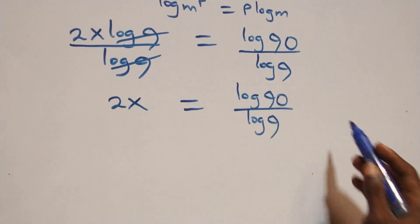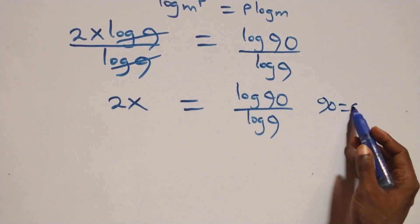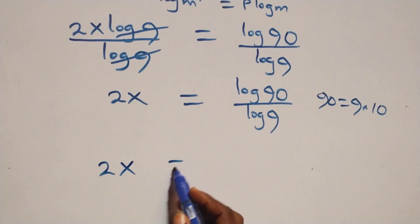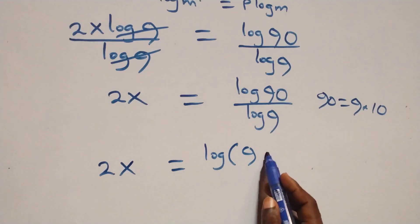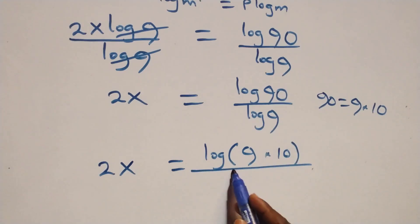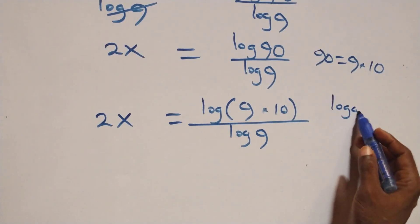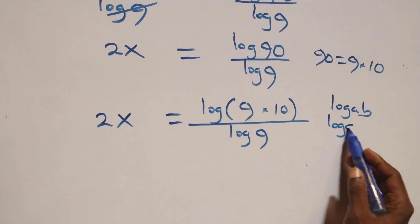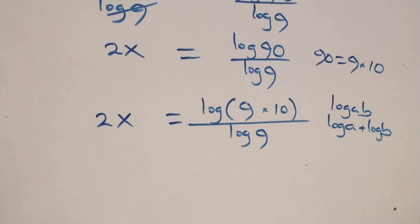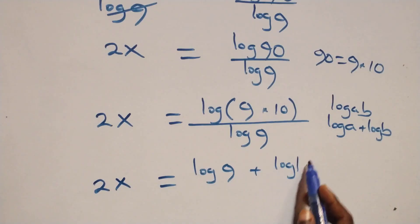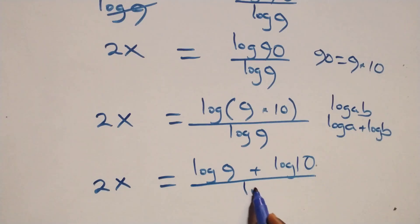The next step: we can express 90 as 9 times 10. This implies 2x equals log(9 × 10) over log 9. Then we apply the logarithm product rule: log(a × b) is the same as log a plus log b. So we have 2x equals log 9 plus log 10, all over log 9.